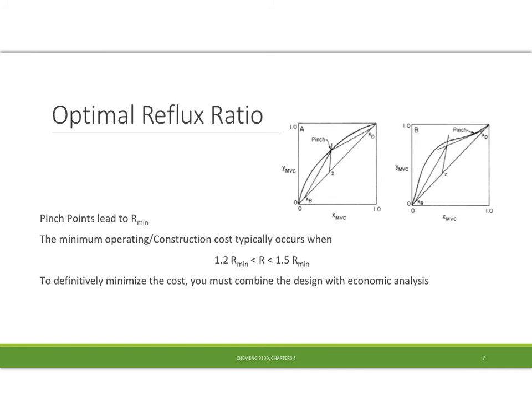Now we've only been looking at this one system, so our pinch point for this nice ideal system is always going to be kind of where the feed line Z crosses the equilibrium curve. But other systems that are trying to create an azeotrope — they've got these little wiggles to them, a little more texture like in this graph right here. There the pinch point may be somewhere before you actually get to the equilibrium point. We'll be looking at other examples of other systems on Friday and have a chance to see how the shape of the equilibrium data affects the number of stages, the size of the tower, etc.